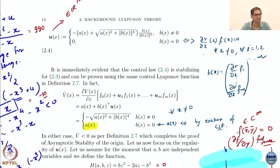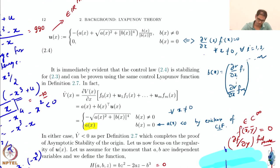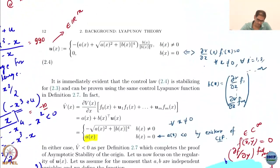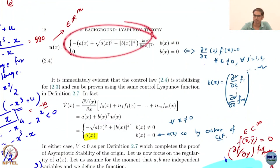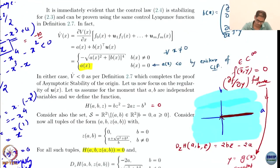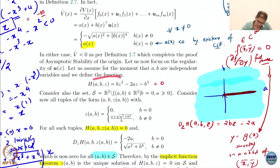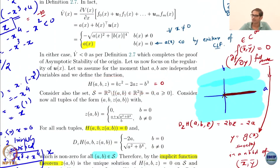Which means what? That essentially means that your states are scalar states. So what do I do? I basically write this as a function. This is that function.